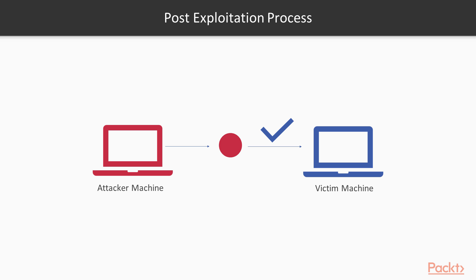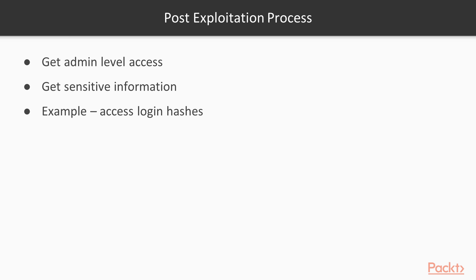Now, what we need to do here is take help of Metasploit. We need to use UAC bypass exploits, and then we can perform post-exploitation. We can get admin-level access with the help of post-exploitation techniques. We can also gather sensitive information — for example, the login details of the victim machine, like hashes available in the victim machine. We cannot do this with exploitation alone; we have to perform post-exploitation to get more details from the systems.